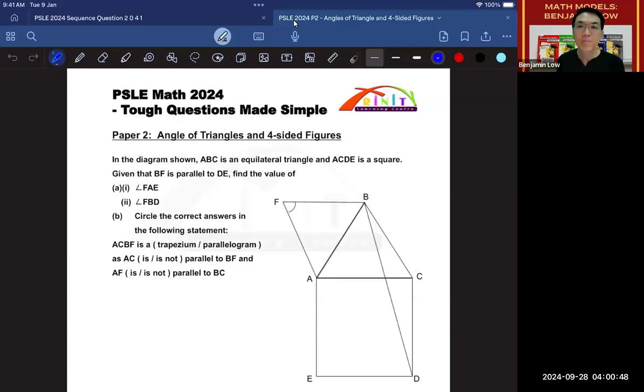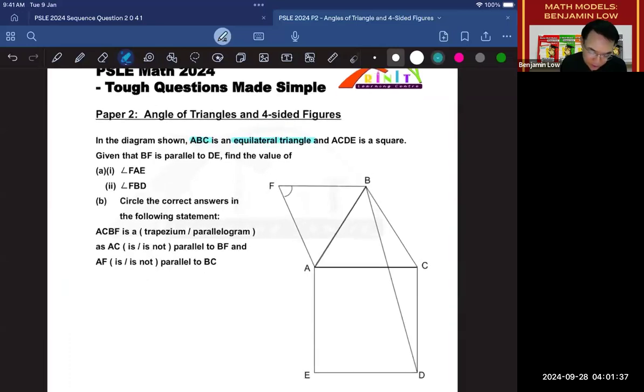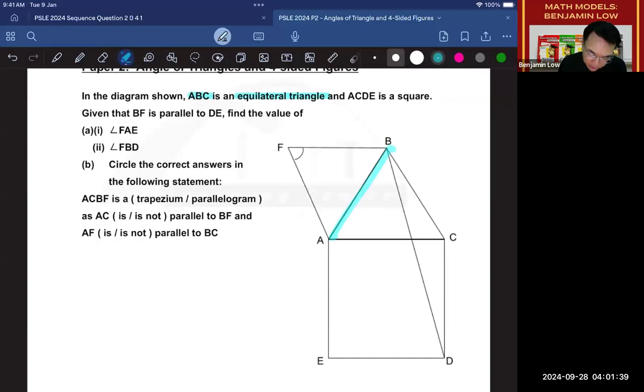Then, it says here that ABC is an Equilateral Triangle. So this triangle here is an Equilateral Triangle and next, they say ACDE is a square. So ACDE is a square. So these two shapes have something in common, which is that they all have equal sides.